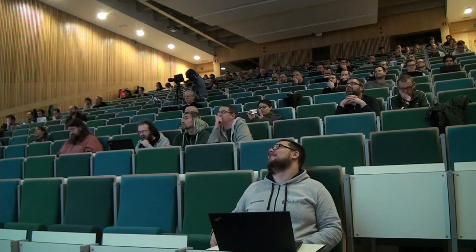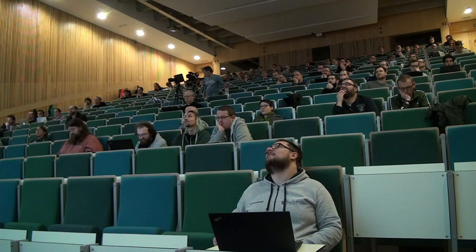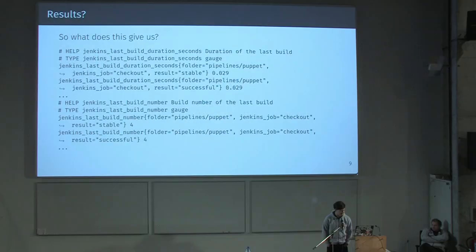One frustration I had: Jenkins decided to switch to XML 1.1, which pretty much nothing supports. So it's pretty hacky right now — if someone can patch that, please do. What does this give us? A bunch of metrics. Anyone familiar with Prometheus will recognize this format, but yeah, this is just a bunch of text. What can we actually do with this?